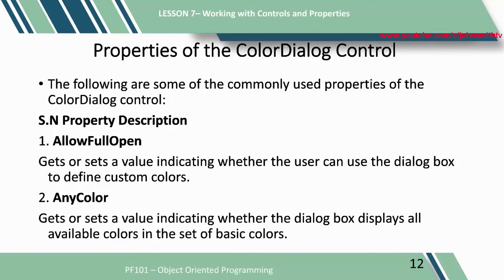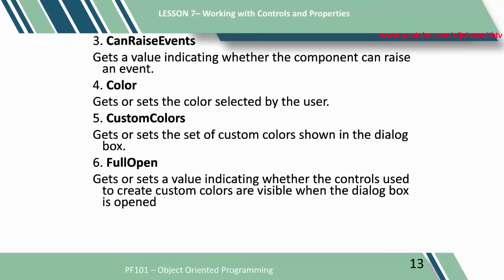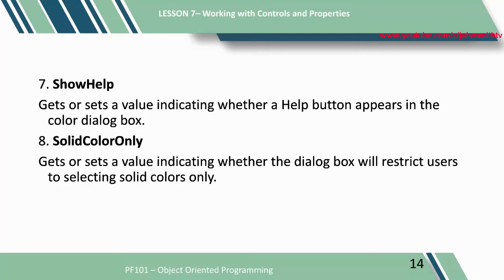Properties of the color dialog control: 1. Allow full open — gets or sets a value indicating whether the user can use the dialog box to define custom colors. 2. Any color — gets or sets a value indicating whether the dialog box displays all available colors in the set of basic colors. 3. Can raise events — gets a value indicating whether the component can raise an event. 4. Color — gets or sets the color selected by the user. 5. Custom colors — gets or sets the set of custom colors shown in the dialog box. 6. Full open — gets or sets a value indicating whether the controls used to create custom colors are visible when the dialog box is open. 7. Show help — gets or sets a value indicating whether a help button appears in the color dialog box. 8. Solid color only — gets or sets a value indicating whether the dialog box will restrict users to selecting solid colors only.